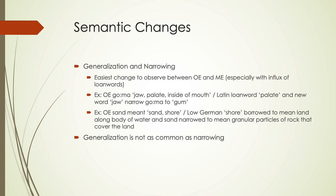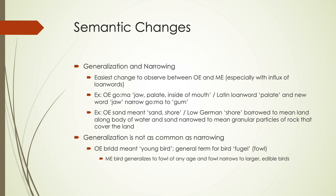Generalization is not as common, but we do see it occasionally. In Old English, 'brid' meant young bird, and we now use this as a general term for bird. The general term 'fowl' got more narrow, so 'bird' generalizes to fowl of any age and 'fowl' narrows down to just the kinds of birds that we eat — so we see a combination of generalization and narrowing there.